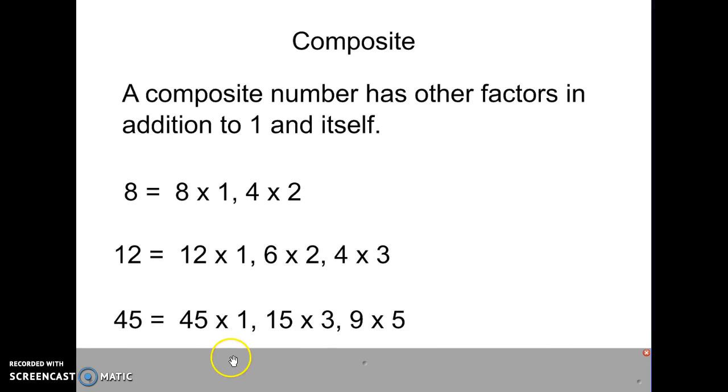45 is a composite number because we have factors of 45, 1. But also, 15, 3, 9, and 5. So, that is a composite number. They have more factors than just themselves in 1.